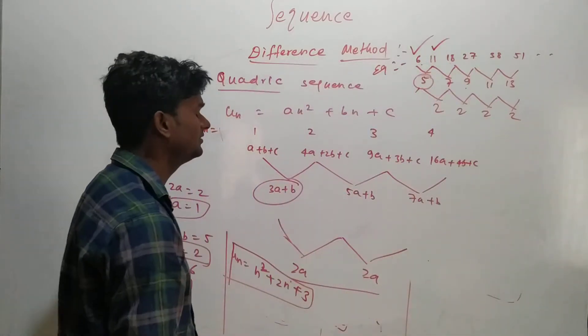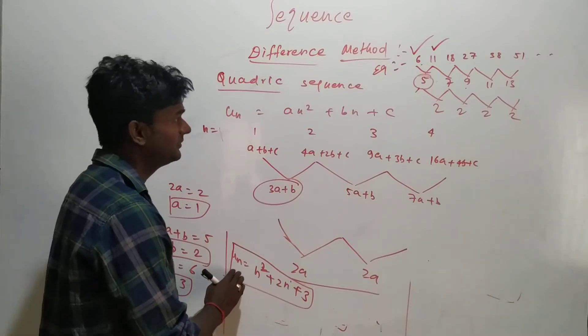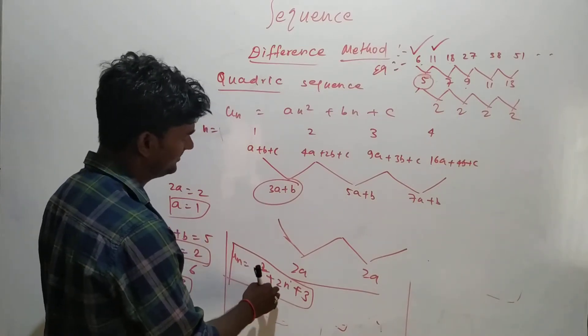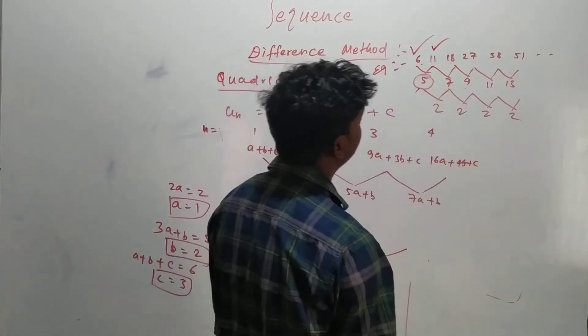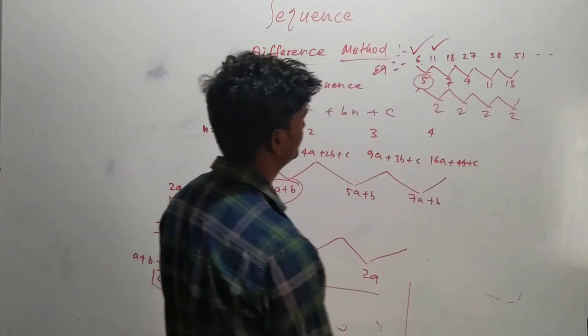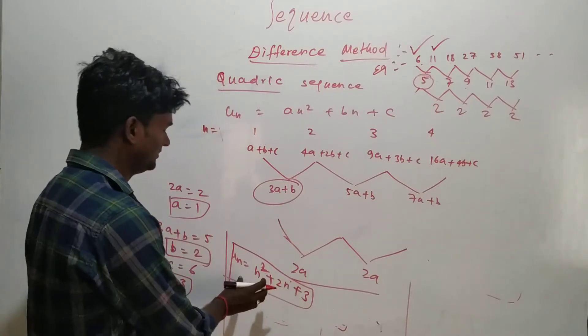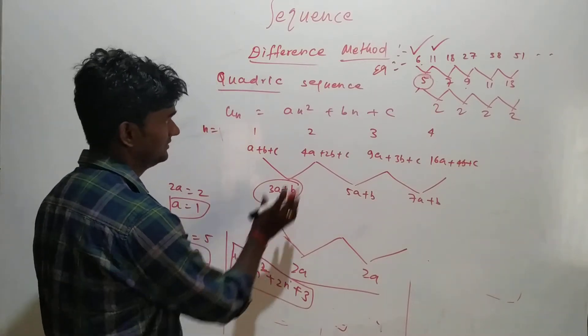You can find other terms to verify. So as it is satisfying u_n equal to n square plus 2n plus 3 for the given sequence 6, 11, 18, 27 and so on, this is the exact solution for the given sequence.